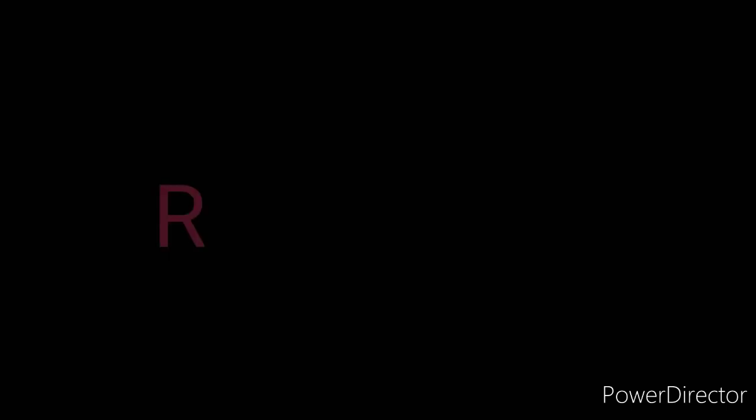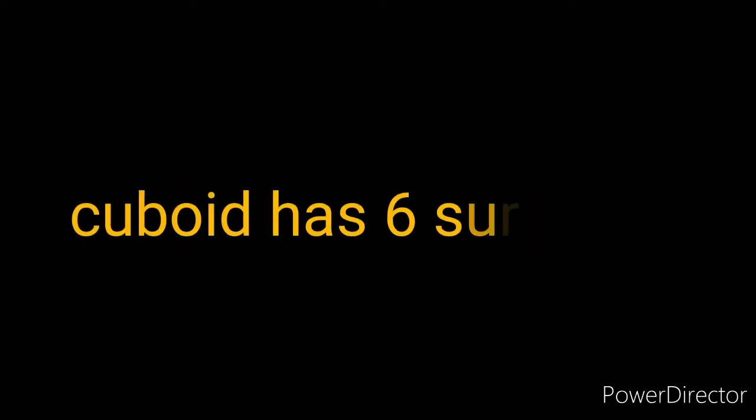Children, remember these things. Cuboid has 6 surfaces. It will slip down the slope because of its flat surface.